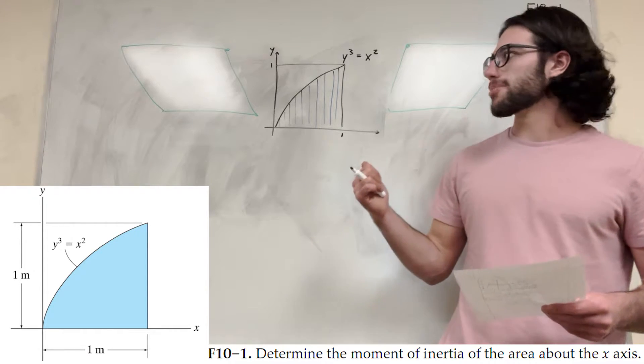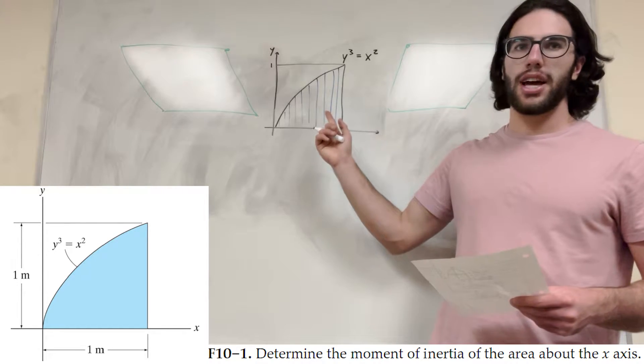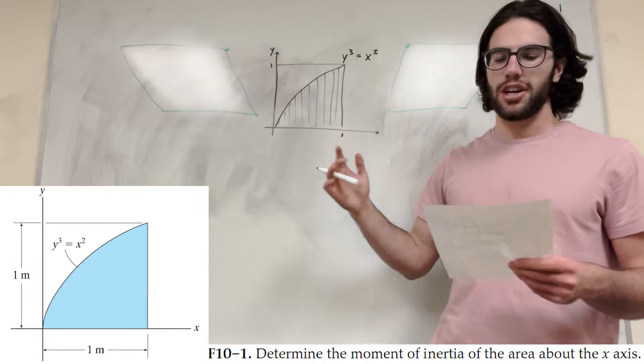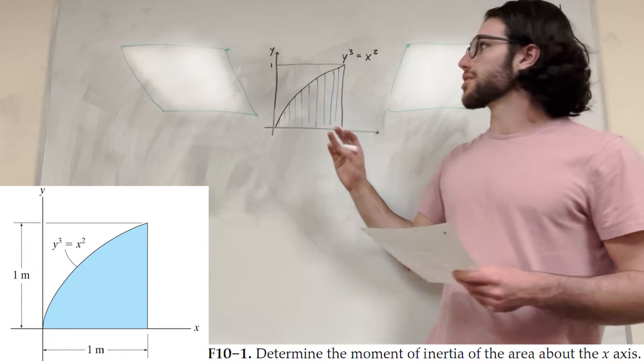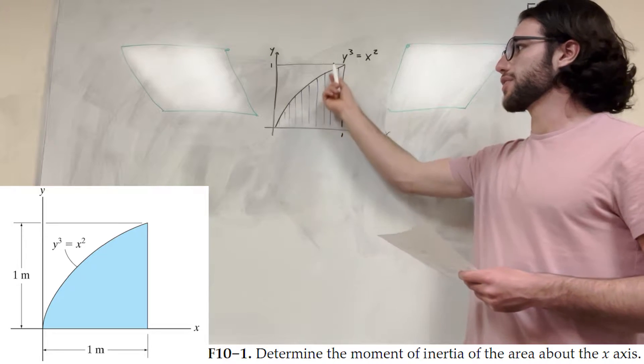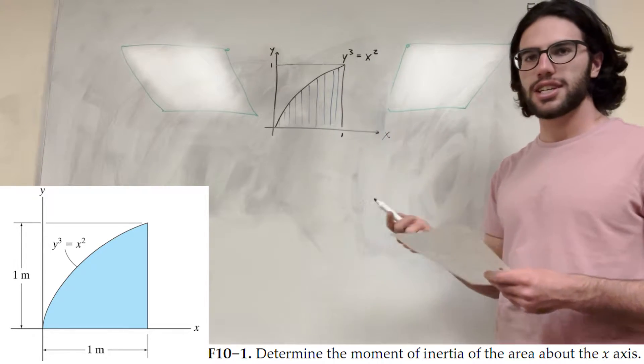What's up Cal gang? Alright, so we have a statics problem today. We have the shape here and we're trying to find the moment of inertia around the x-axis. So if this is the x-axis, we're trying to find the moment of inertia as if we were spinning that around the x-axis. Let's get started.